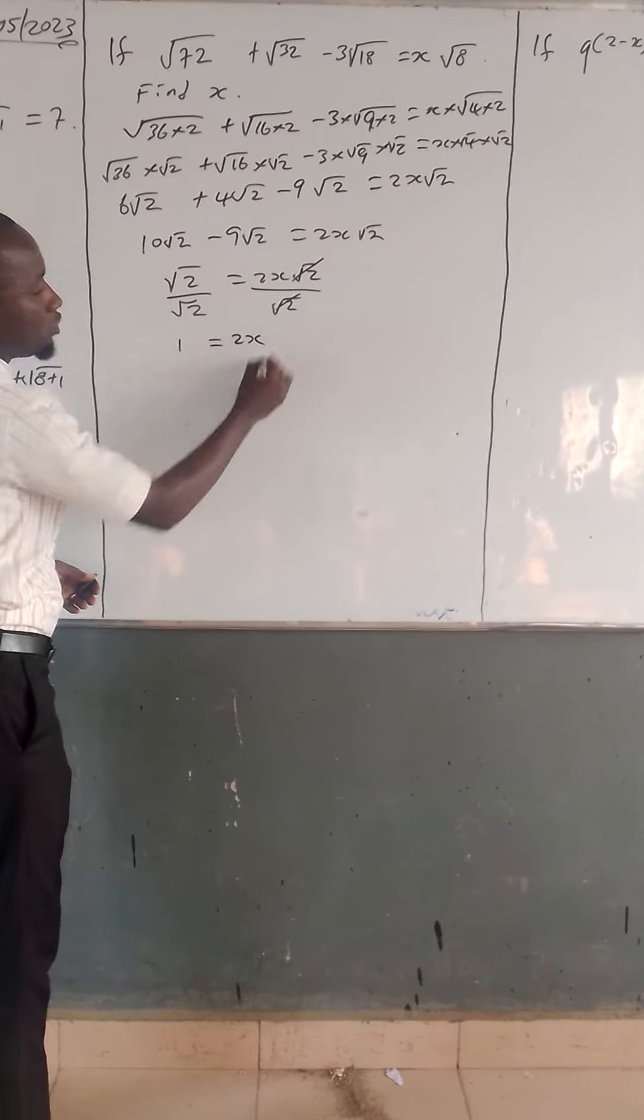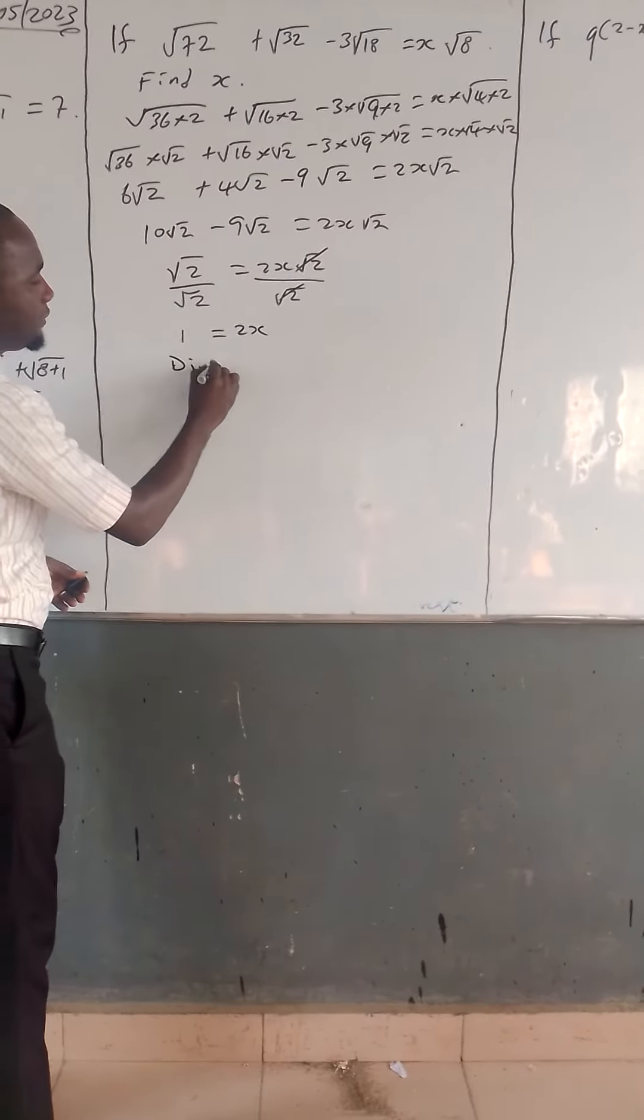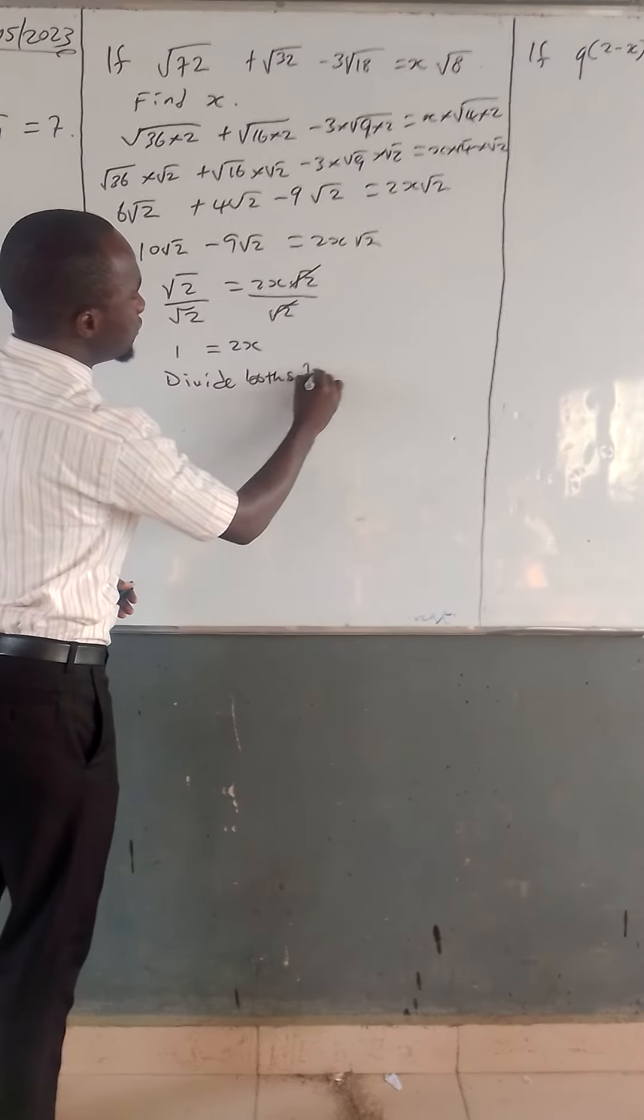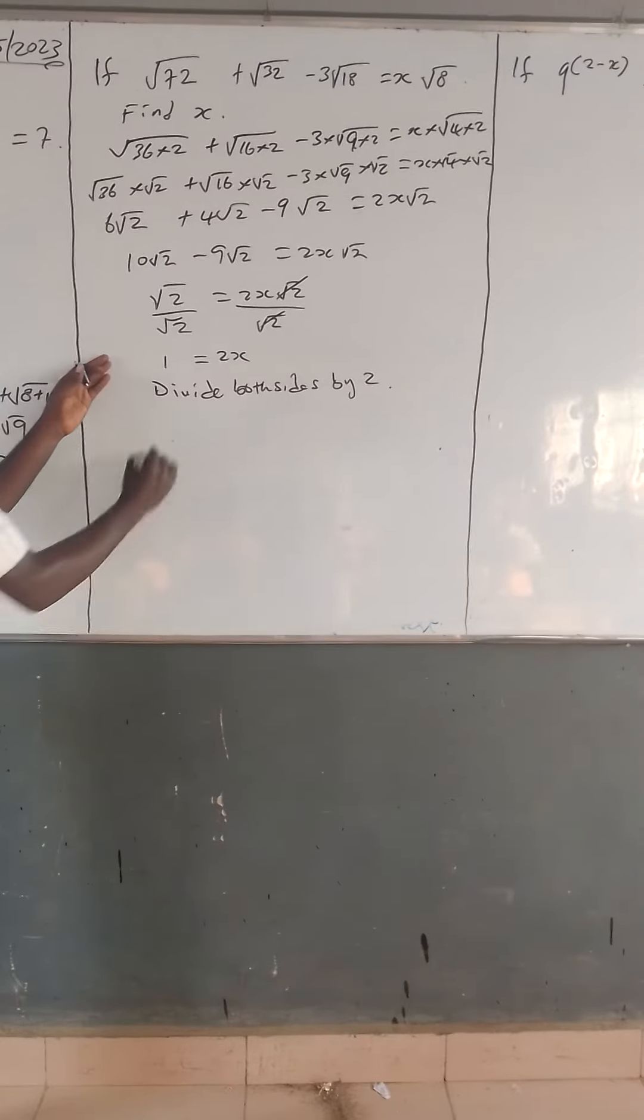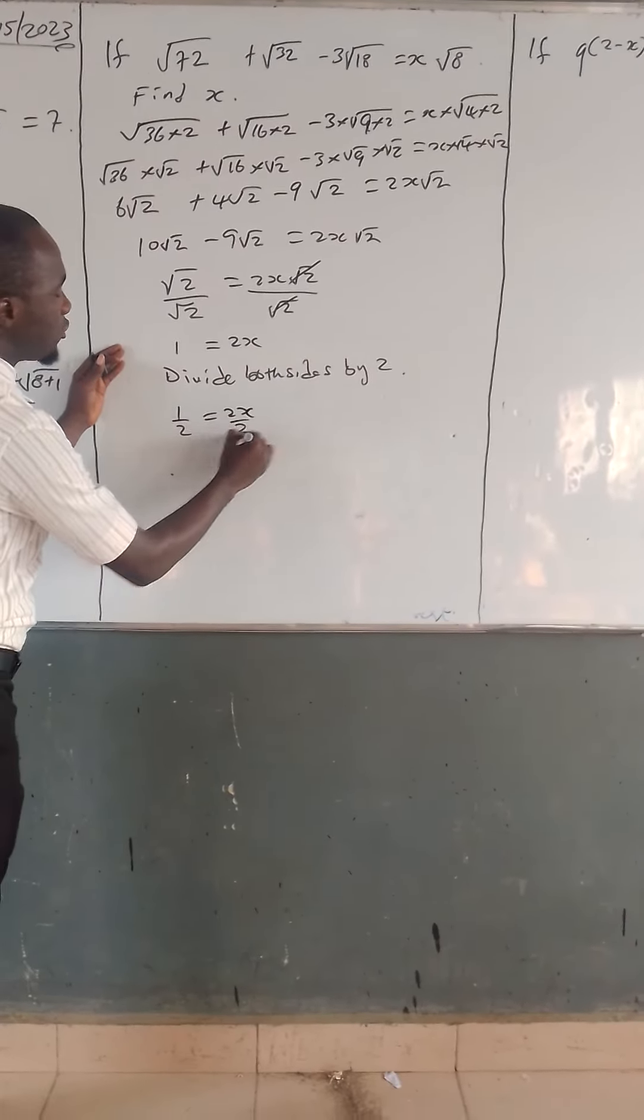That means 1 equals 2x. We will now finally divide both sides by 2 in order to get x. 1 divided by 2 equals x over 2.